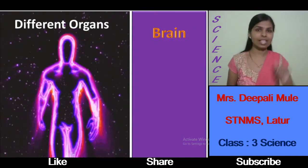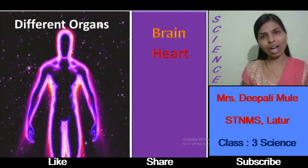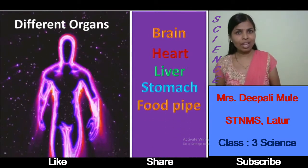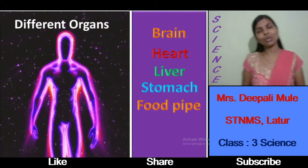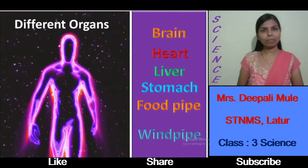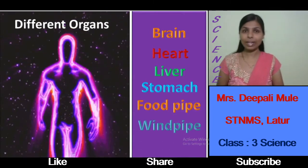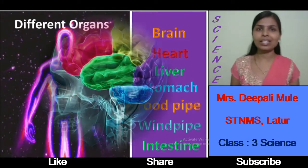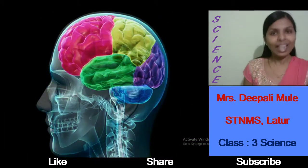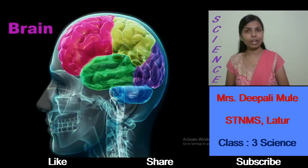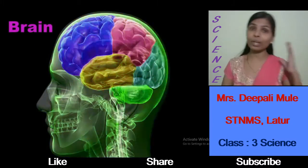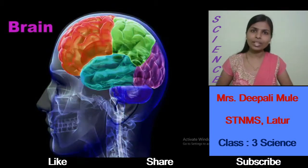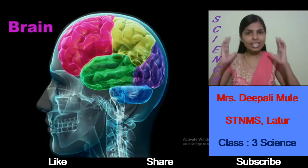Brain is one of the organs present inside our body. Next we are going to learn about the heart, then the liver, next the stomach, then the food pipe, different types of intestines — that is small intestine and large intestine — the wind pipe, kidneys, and many more. Let us first discuss the brain. Brain is a very important organ present inside our body. It is located inside our head.